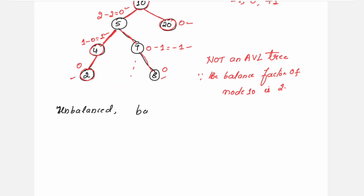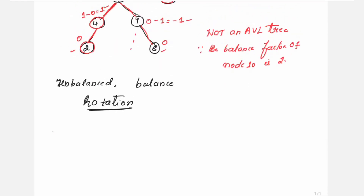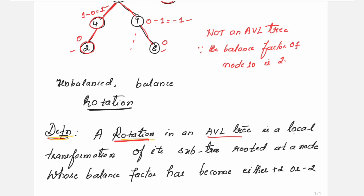We need to balance this tree, and the balance can be done by transforming the tree with a rotation. A rotation in an AVL tree is a local transformation of its subtree rooted at a node whose balance factor has become either plus 2 or minus 2.